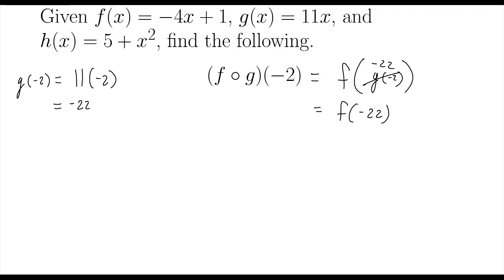I know how to figure that out because I'm given the function f here. What is f of negative 22? Negative 4 times negative 22 is a positive 88. And 88 plus 1 is 89. So, 89 is my final answer.